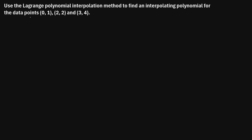One way to do that is by using the Lagrange polynomial interpolation method. We say that the polynomial of x is P sub 2 — this 2 is one less than the number of data points we're given. We can label each of these points as x1, y1, x2, y2, and x3, y3.